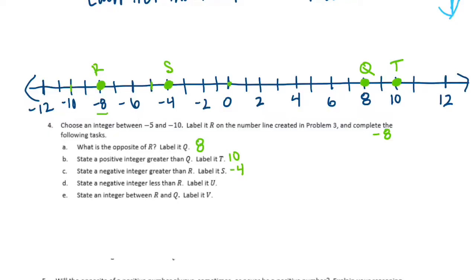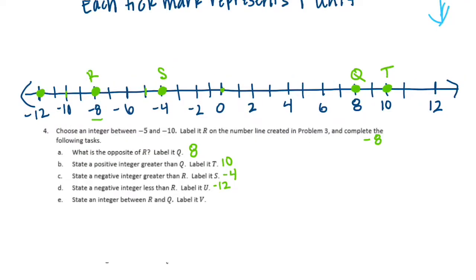State a negative integer less than r and label it u. We're looking for something less than negative 8, so that could be negative 9, negative 10, negative 11, or negative 12. I'll go with negative 12. And for part E, state an integer between r and q and label it v. We're looking for anything between negative 8 and 8, so I'll pick 2 and label it v.